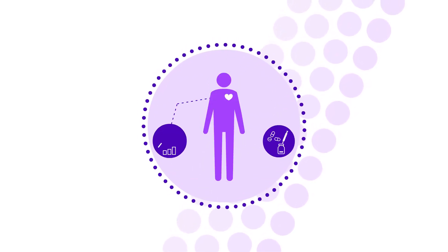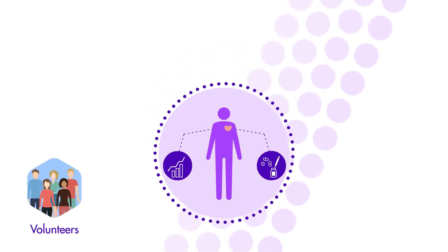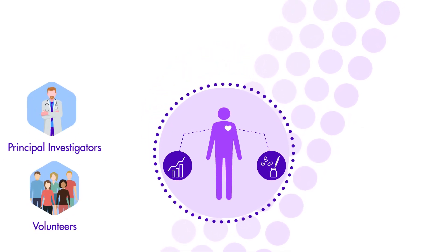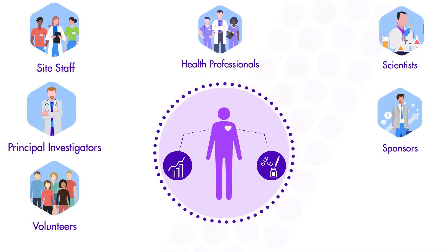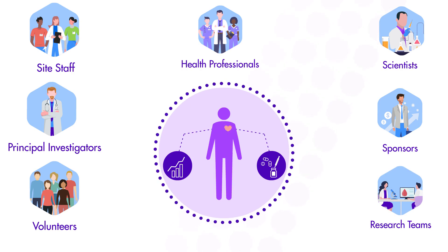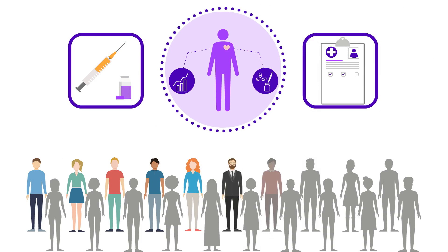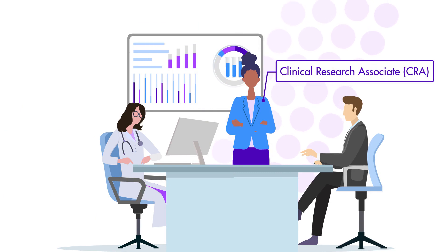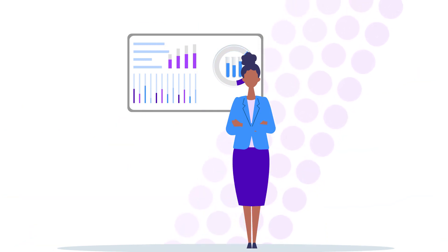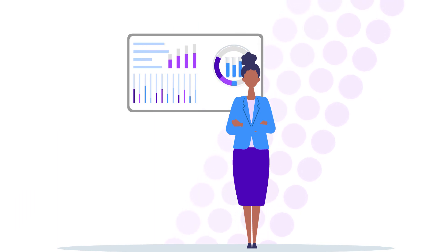A clinical trial project involves several people and roles, from volunteers, principal investigators, site staff, health professionals, scientists, sponsors, and research teams, all coming together and working together to bring new ways of treatment to people. One of the roles that plays a key part in this process is the clinical research associate, and that's you.